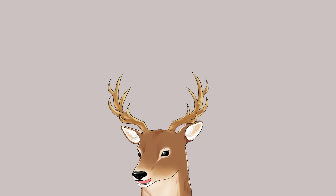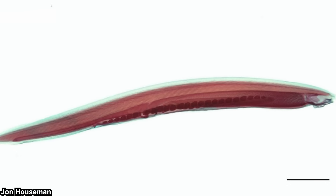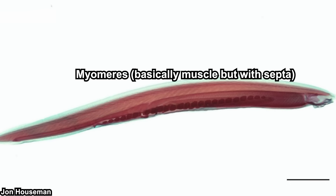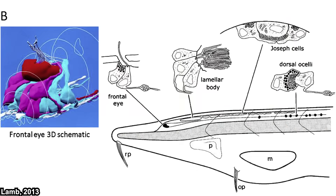Now, what about locomotion? I did say they spend most of their time half-buried and filter-feeding, so do they have a locomotor system? Good news — yes, they do. While they don't have an endoskeleton or exoskeleton, they do have myomeres, which means they have muscles. These myomeres attach to their notochord, which serves as the axis of their locomotion. So yes, they can indeed swim, but they are relatively poor swimmers.